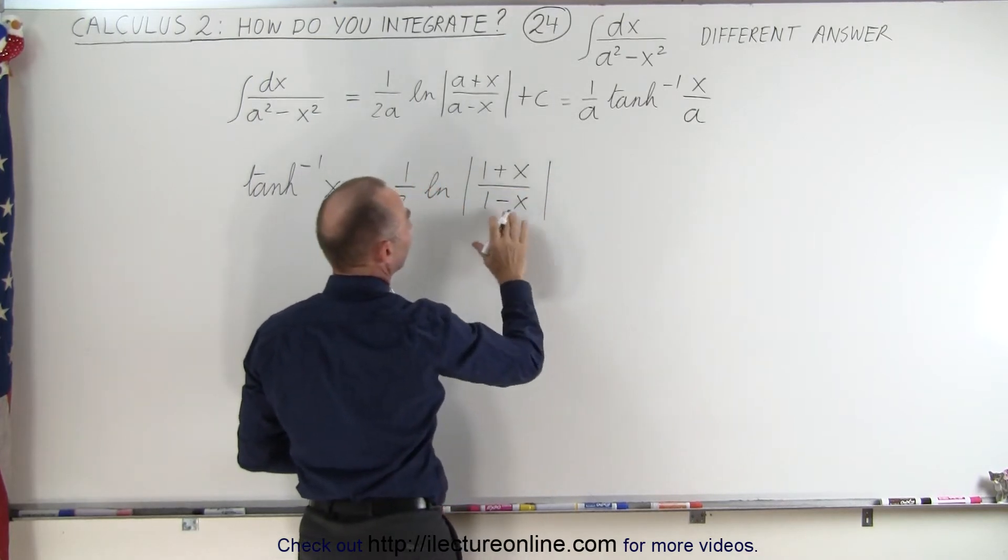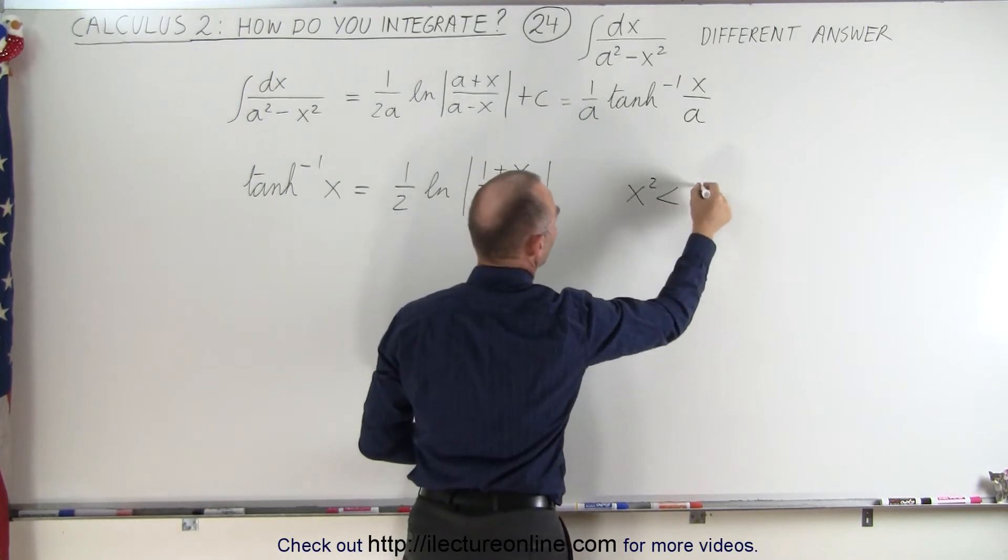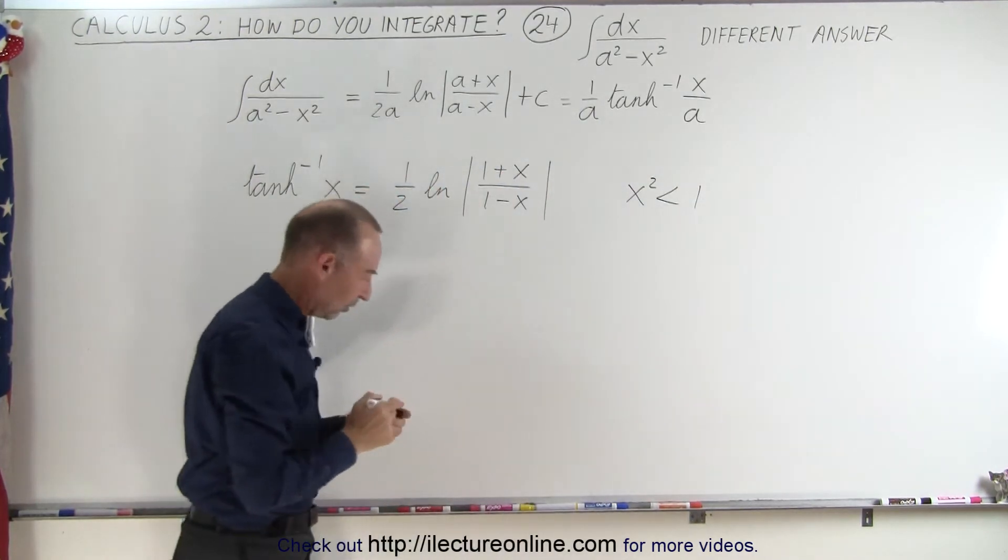Of course, we require that x squared would be smaller than one, so that the denominator doesn't become negative.